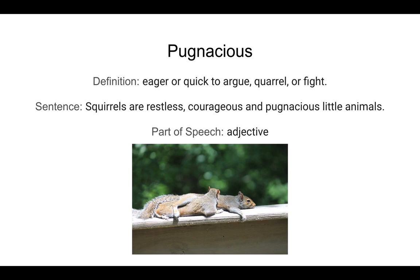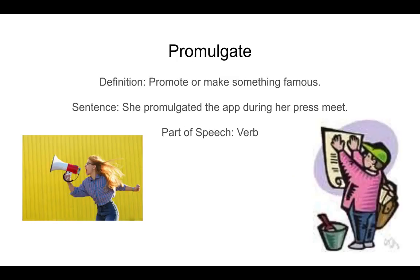The next word is promulgate. Promulgate means to promote or make something famous. A sentence for promulgate: she promulgated the app during her press meet. Part of speech is a verb. In the pictures there's a person telling everybody and promoting something, and in another picture there's a person putting out banners, posting in a newspaper, and sticking posters everywhere to promote something.